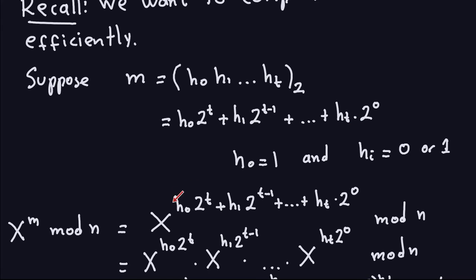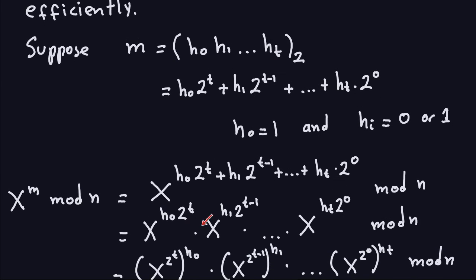In the exponent I have an addition. Adding exponents is the same as multiplying when you multiply the bases. So this becomes x to the h0 times 2 to the t, times x to the h1 times 2 to the t minus 1, and so on — because they have the same base, you just add the exponents. So this addition in the exponent becomes a multiplication when you write down all the bases.